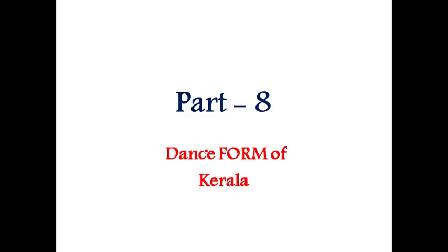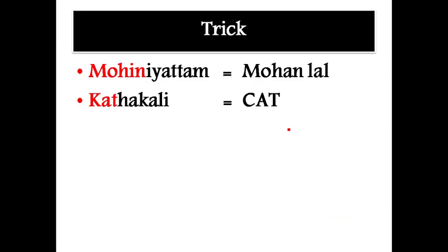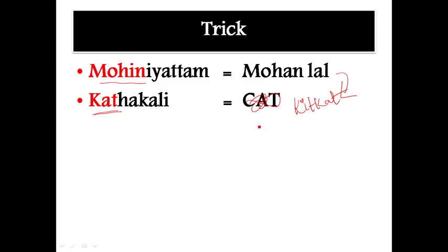Part 8: Dance forms of Kerala. There are two important dance forms: Mohinattam and Kathakali. The trick: Mohinattam sounds like 'Mohanlal', the famous Malayalam actor from Kerala. Kathakali contains 'Kat', which reminds us of 'Kit Kat' chocolate. So remember: Mohanlal eating Kit Kat. Mohanlal = Mohinattam, Kit Kat = Kathakali.